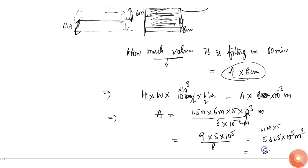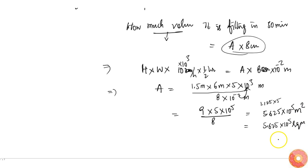So 5.625 into 10 power 5, so that is 0.5625 square kilometer. This much of area is irrigated.